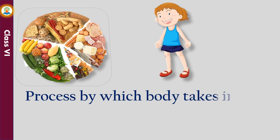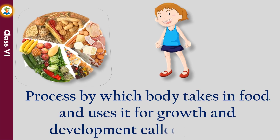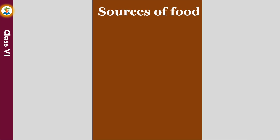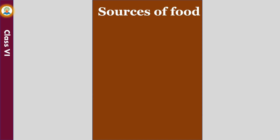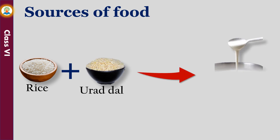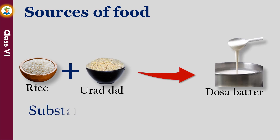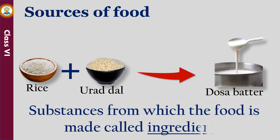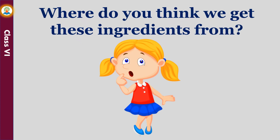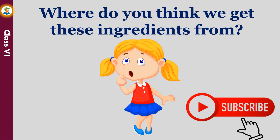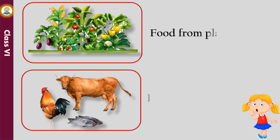The process by which the body takes in food and uses it for growth and development is called nutrition. Do you know what dosa batter is made up of? It is made of rice and urad dal. The substances from which food is made are called ingredients. Therefore, rice and urad dal are ingredients of dosa. We get these ingredients from plants and animals.